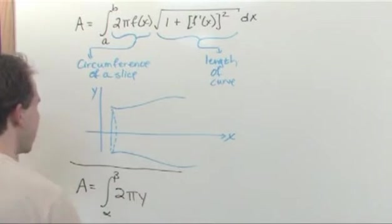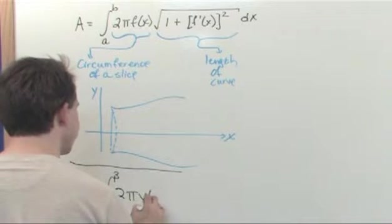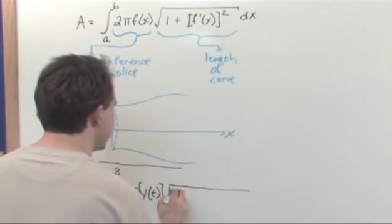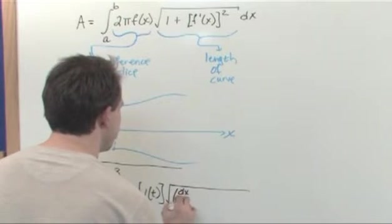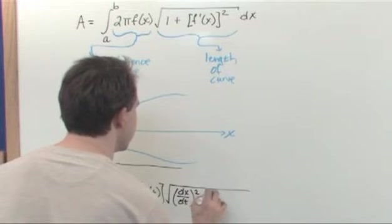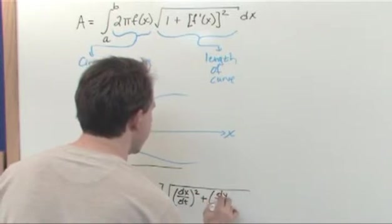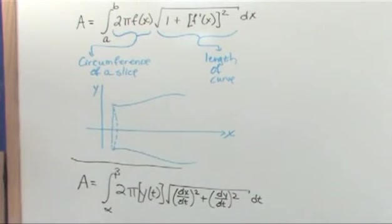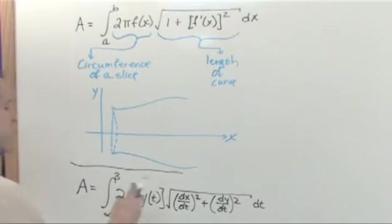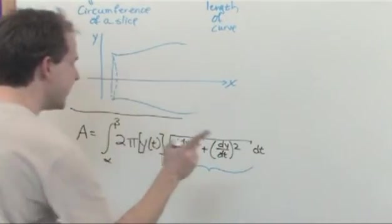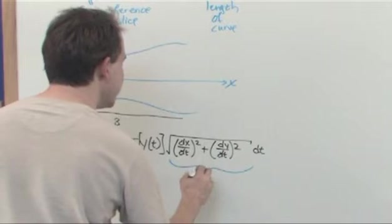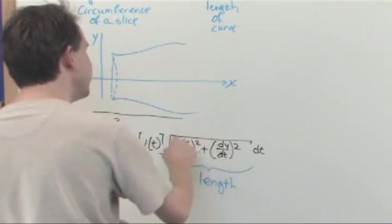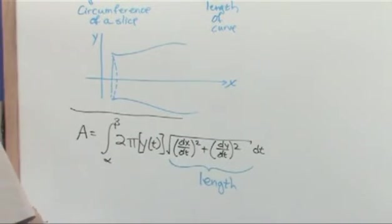Let me write it down, and we'll talk about 2 times pi times y, in this case it's y of t, just because we're talking about parametric, times the square root of dx dt squared plus dy dt squared integrated over dt. Now, let's look at what we have here. This part should look very familiar to you, because from the very last section here, the one right before this one, this is the length of this curve when you have parametric equations, x of t and y of t. You take these derivatives, you plug it in, and we integrate, that's the length.